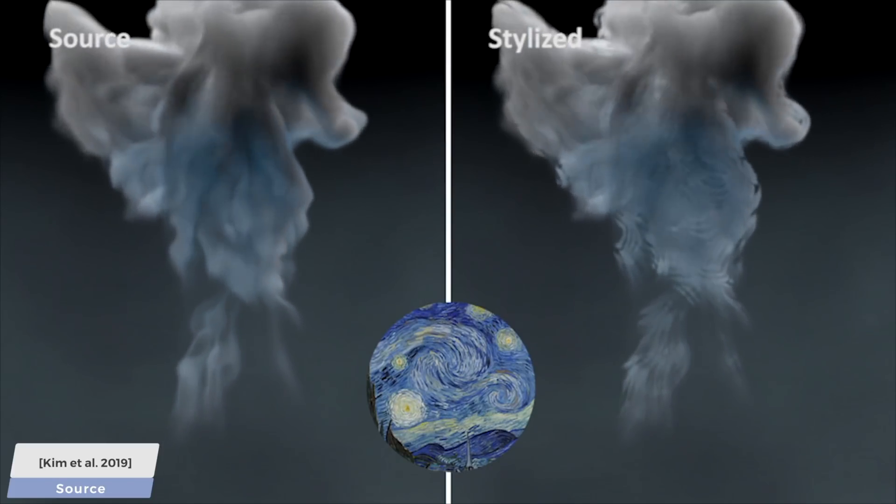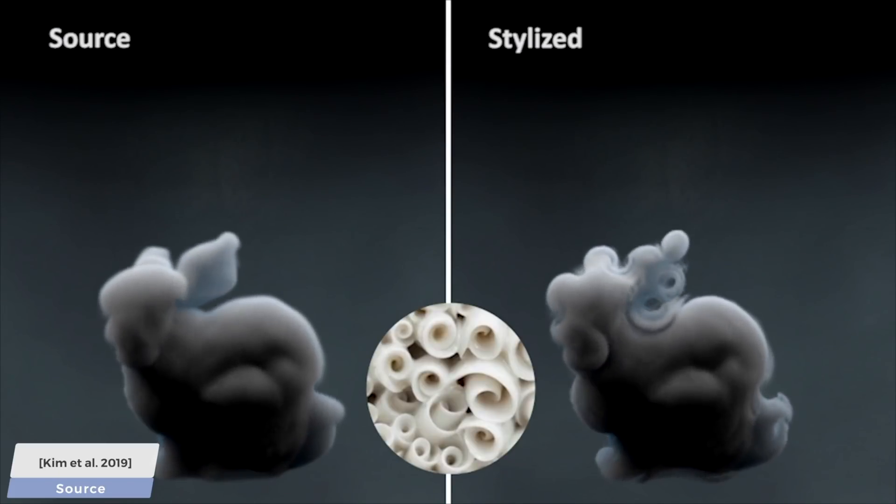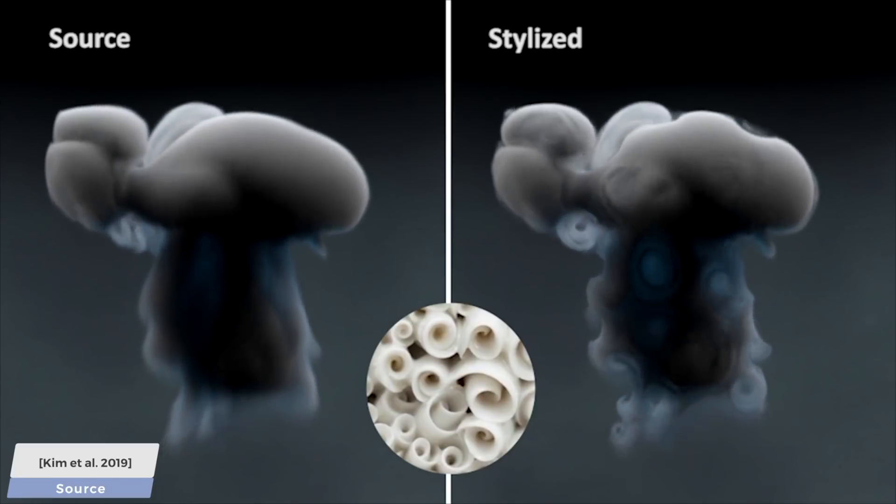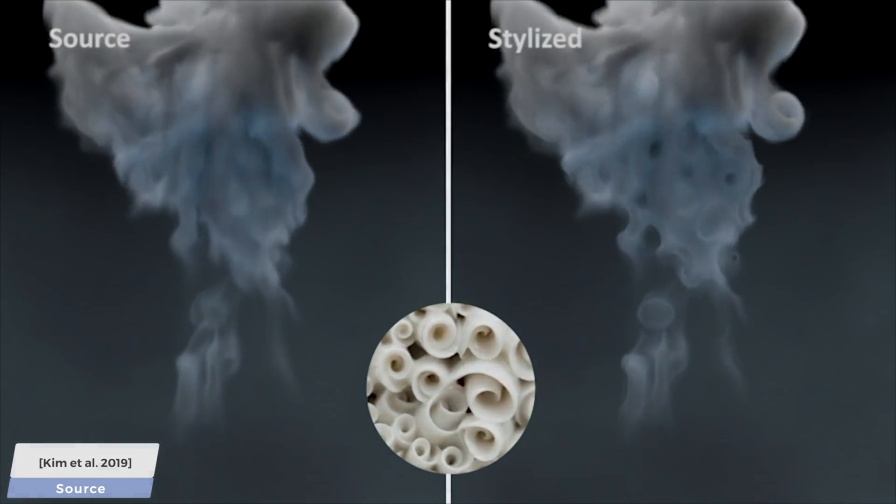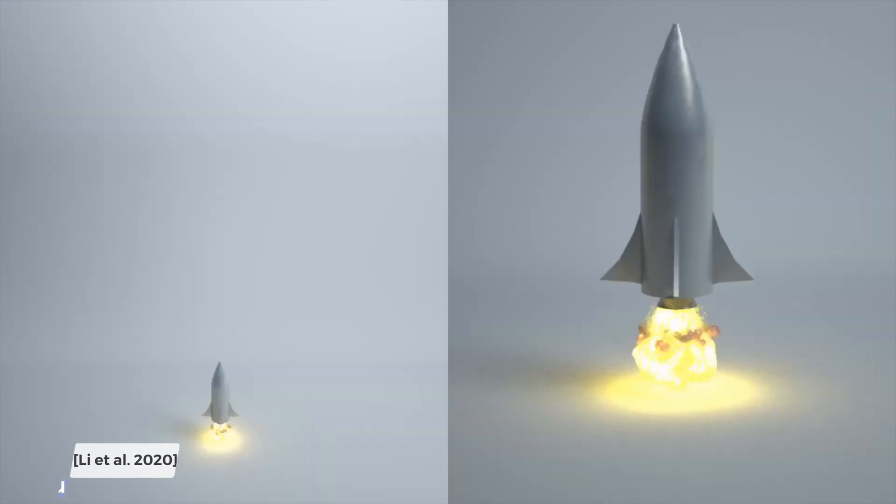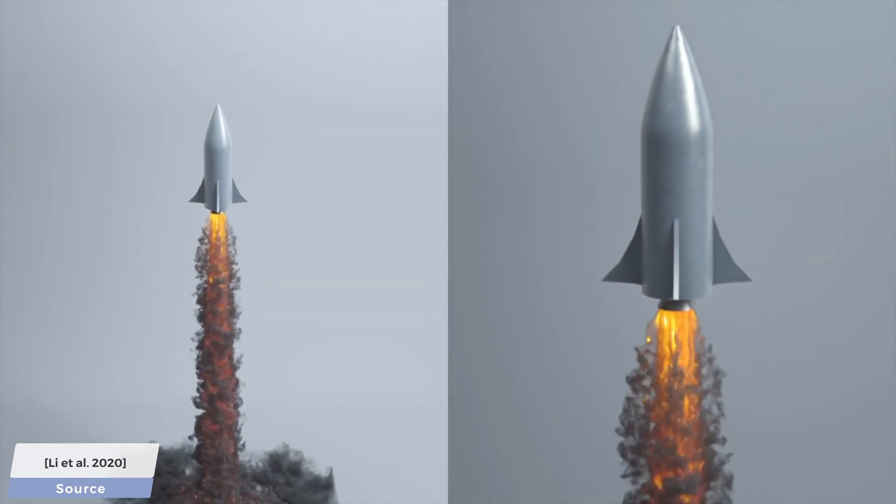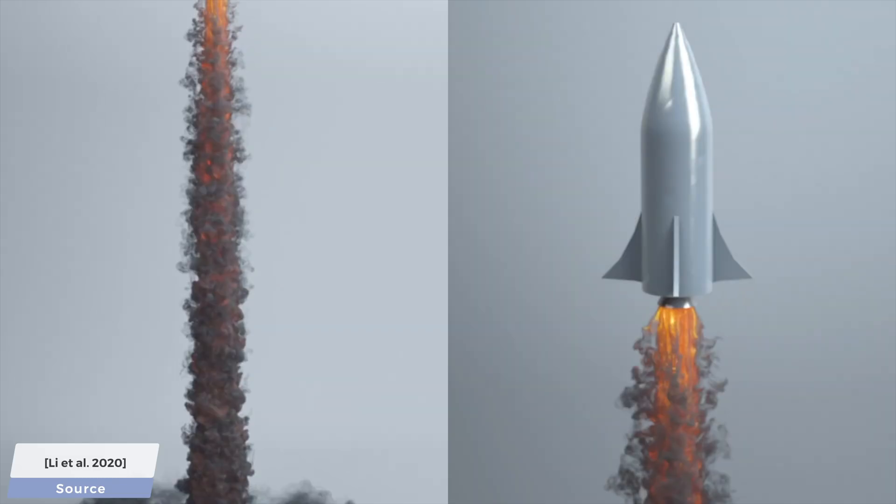Computing these interactions is called coupling, and it is very difficult to get right, but is necessary for many of the scenes you will see throughout this video. This new graphics paper builds on a technique called the Lattice-Boltzmann method, and promises a better way to compute this two-way coupling.